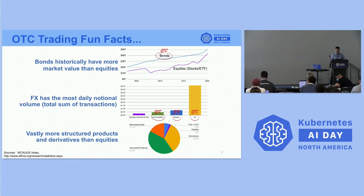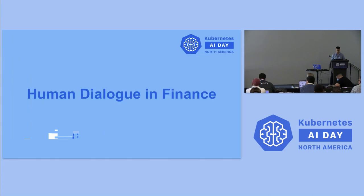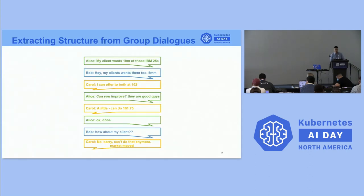If you count the number of things that can be traded in the markets, equity only accounts for 1.5% — only about 30,000 equities and ETFs at most. All other products, like municipal bonds and structured products — where, for example, a bond is hedged against a commodity — are actually traded by people talking to each other.